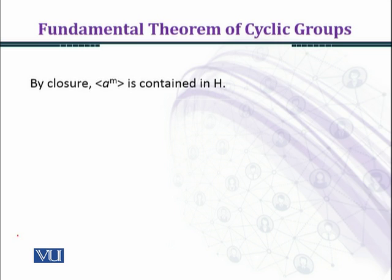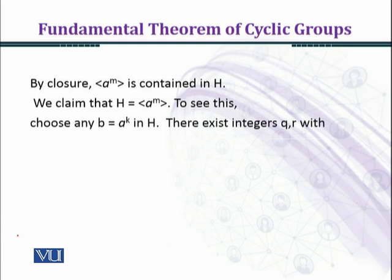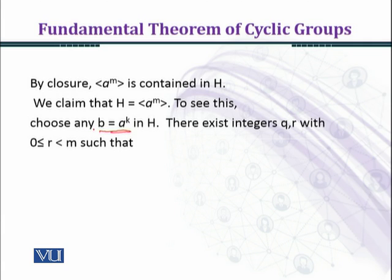The cyclic group generated by a raised to the power m is contained in h. We claim that h is generated by a raised to the power m. To see this, choose any b in h. Then b is in the form of some power of a, so we take b equal to a raised to the power k. There exist integers q and r with 0 ≤ r < m such that a raised to the power k equals a raised to the power qm plus r, by the division algorithm.